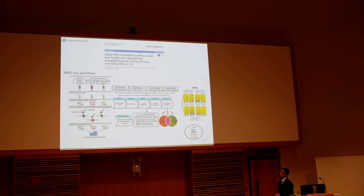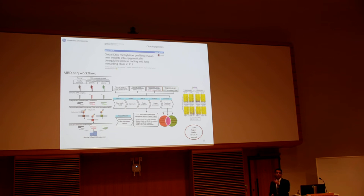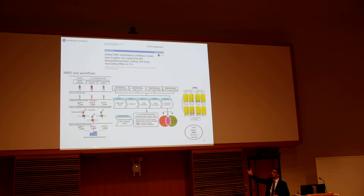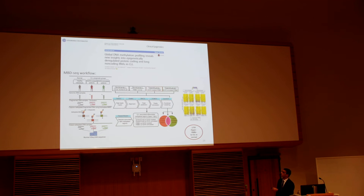Regarding the workflow of MBD sequencing: the starting material is genomic DNA, which is sheared by sonication so that we have fragments, either methylated or unmethylated. The methylated fragments are captured by biotin-labeled MBD domains, followed by a magnetic bead chemistry reaction to do the pull-down, and then library preparation and next-generation sequencing by Illumina. The raw data were subject to bioinformatic analysis, and eventually they came up with approximately 1,750 hypermethylated genes in CLL.